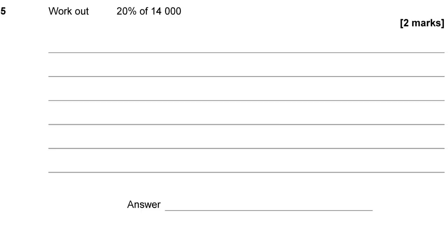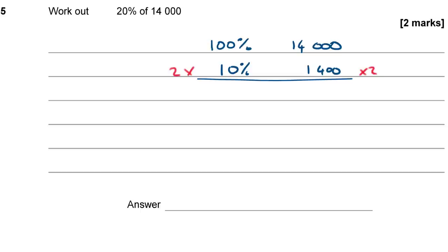Question 5: Work out 20% of 14,000. On a non-calculator paper, start with the fact that 100% equals 14,000. Finding 10% is easy — just divide by 10, which gives 1,400. To get 20%, take two lots of 10%: two lots of 1,400 is 2,800. So 20% of 14,000 is 2,800.